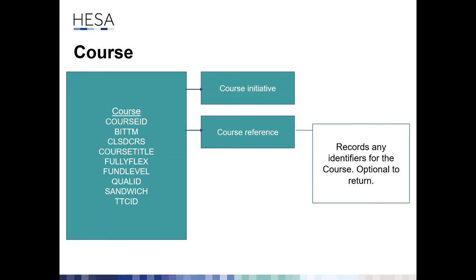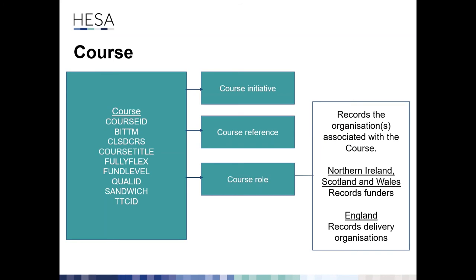Course sub-entities include: course initiative — collecting initiatives associated with the course (e.g. higher apprenticeships), applicable to every student on the course, with valid from/to dates based on provider feedback; course reference — completely optional, allowing providers to record additional identifiers for their own use; and course role — recording which organisations have a particular role in the curriculum. For Northern Ireland, Scotland and Wales this records funding organisations; for England it records delivery organisations, with proportions for multiple organisations.